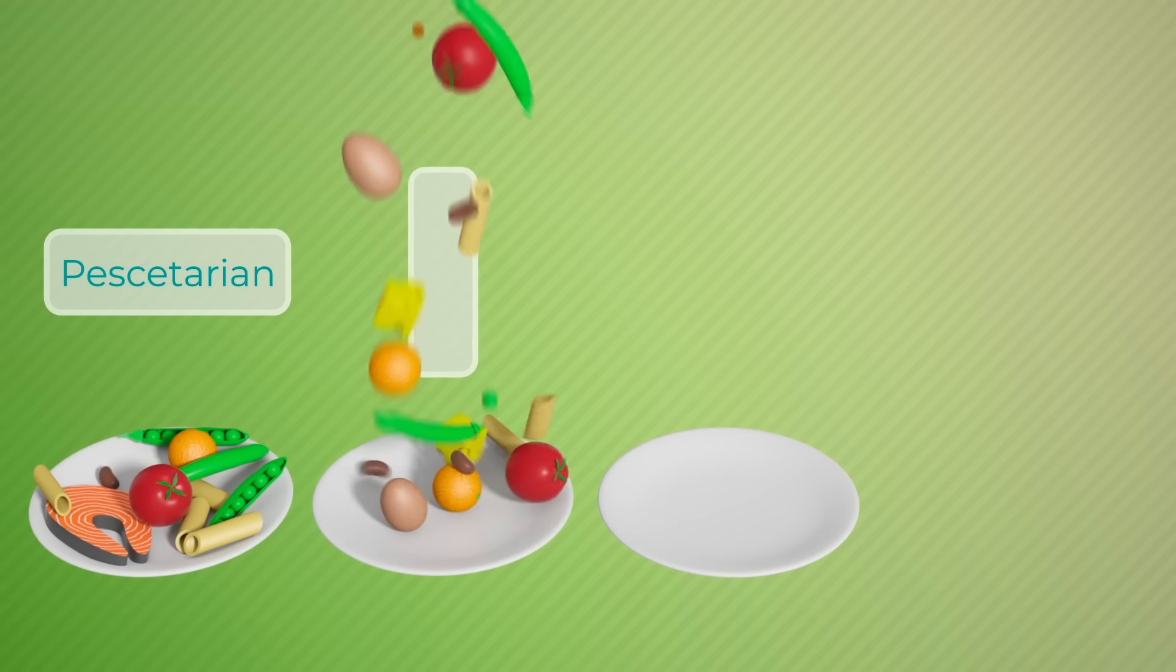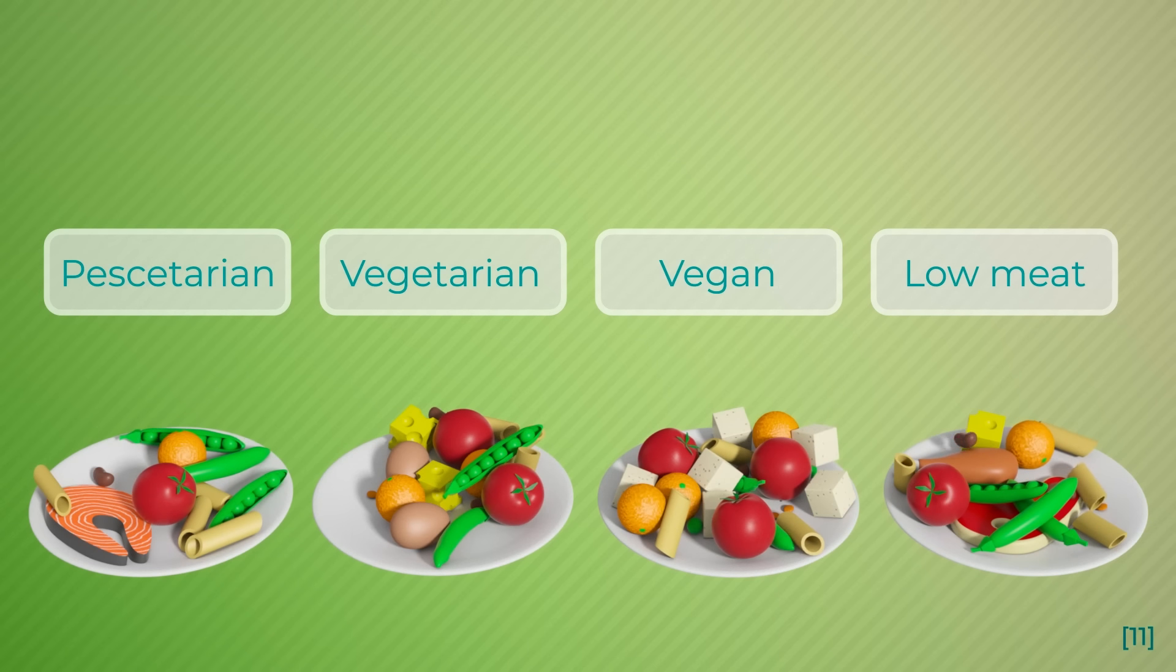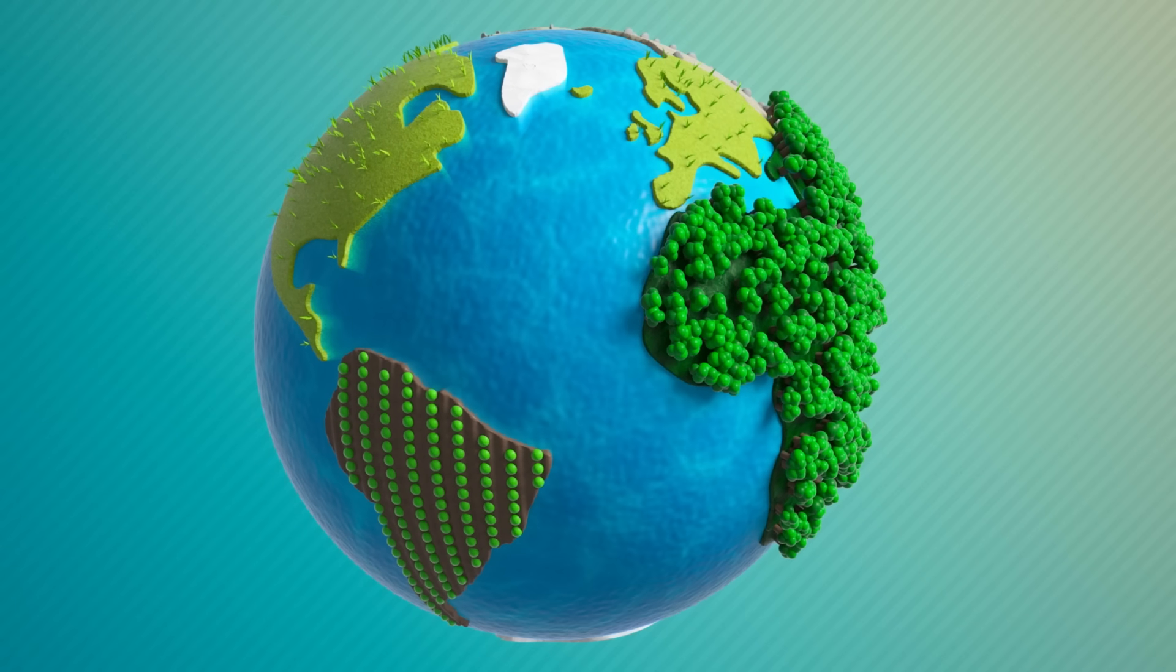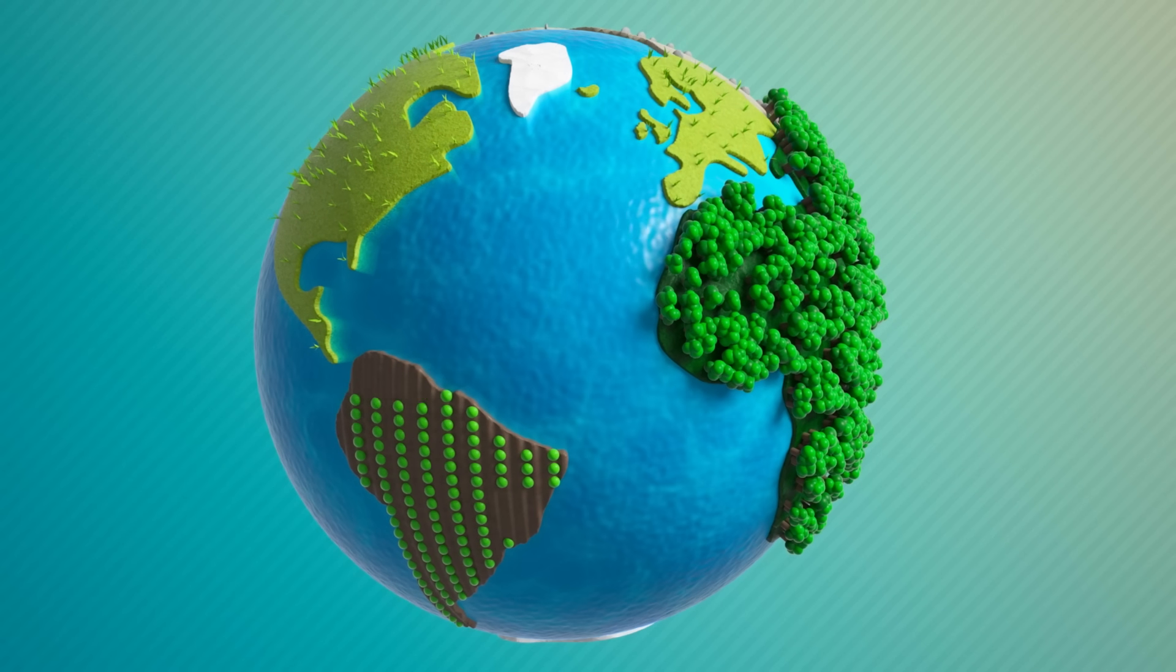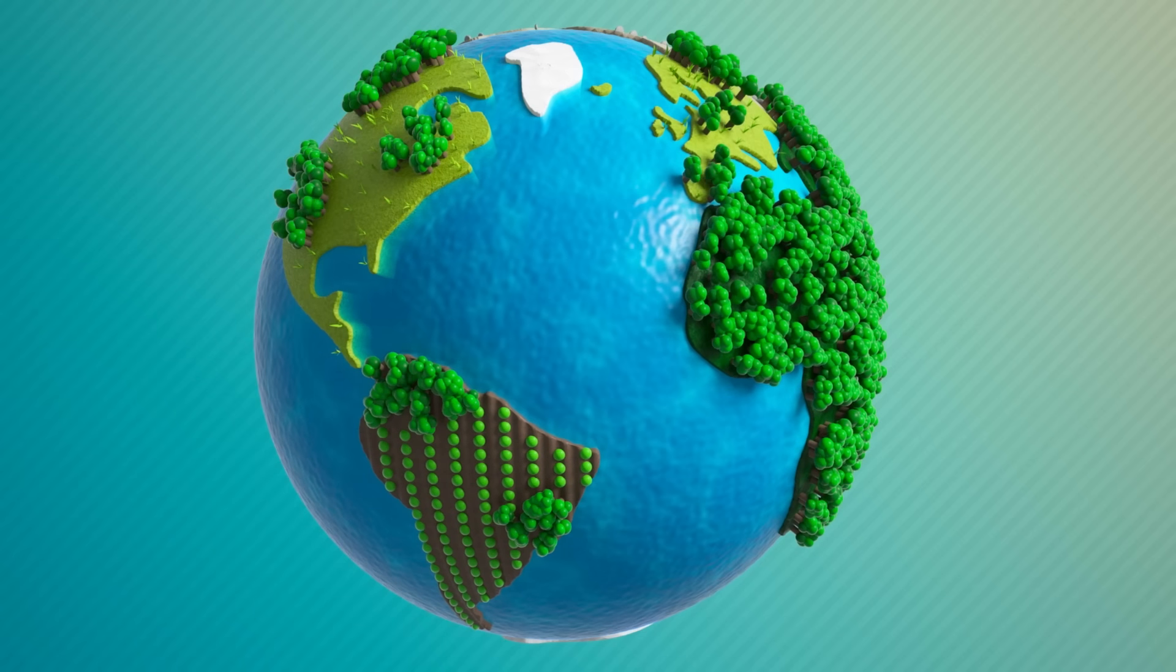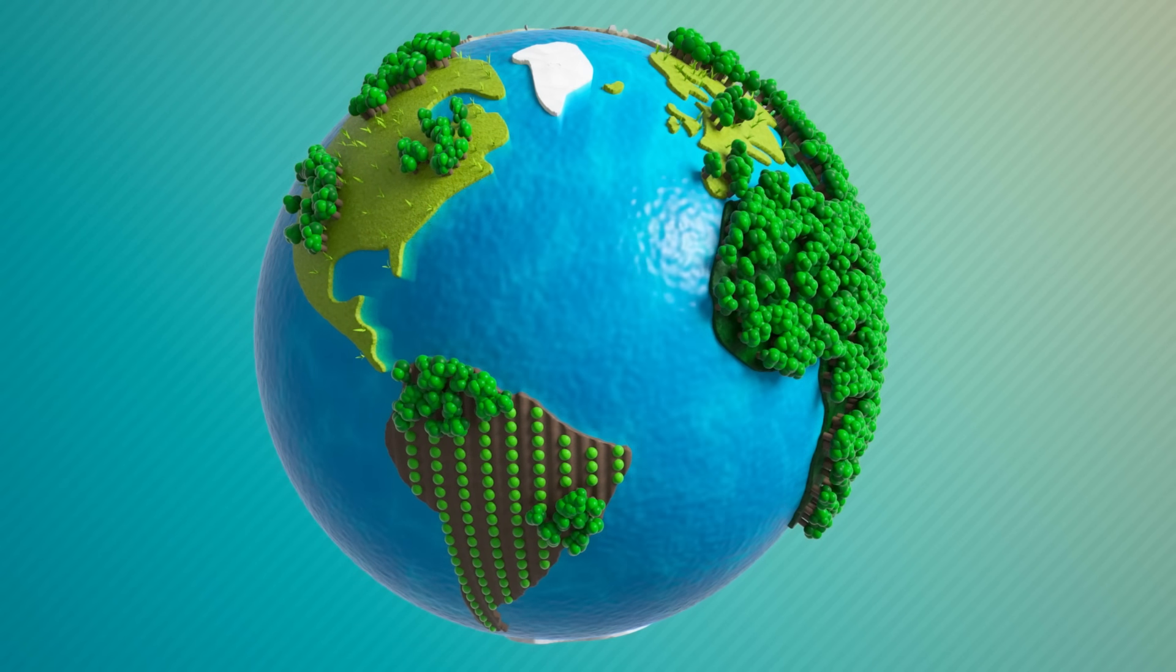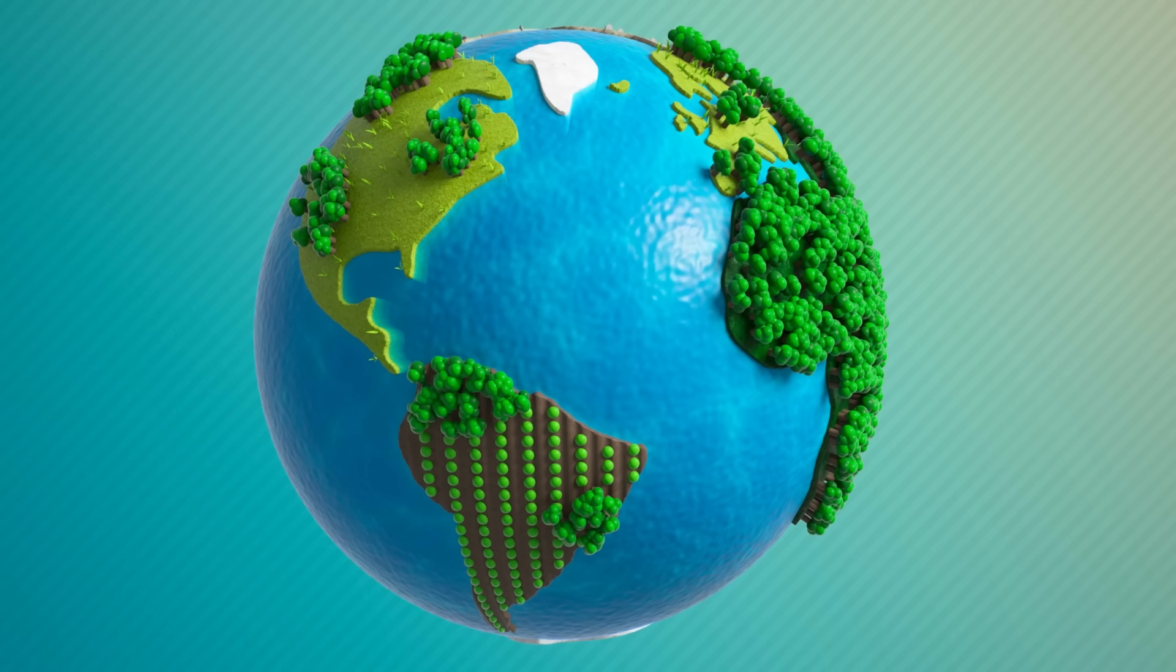Switching to environmentally friendly diets like pescatarian, vegetarian, vegan, or low meat could result in huge benefits to the planet. A strategic reduction of animal products could free up large amounts of agricultural land. Giving this area back to nature would result in massive benefits for the planet. Restoring nature is also a great way to battle climate change.